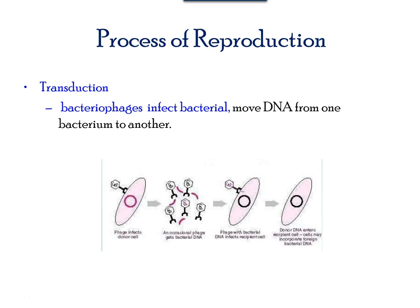The third way of lateral gene transfer is through transduction, in which a virus that infects bacteria moves DNA from one prokaryotic cell to another prokaryotic cell.